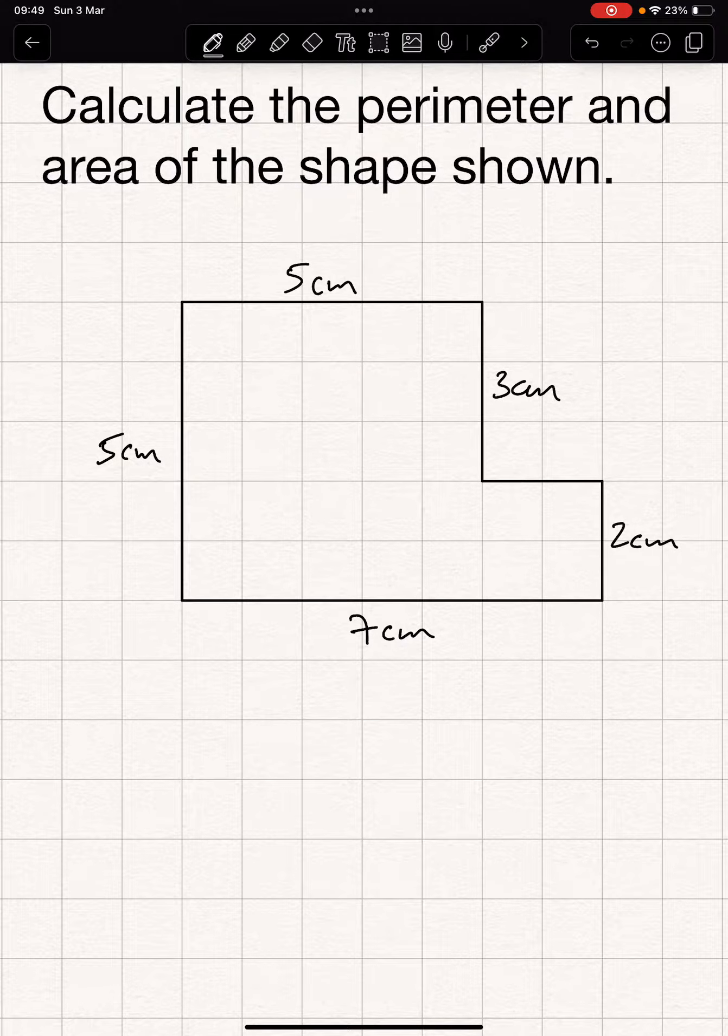Calculate the perimeter and area of the shape shown. Now the perimeter is the distance around, so look at this.